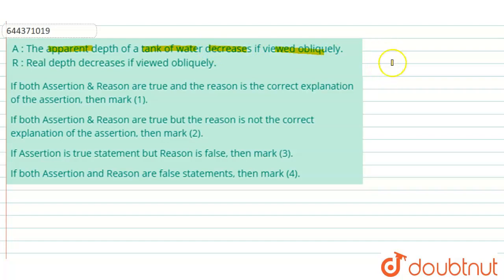If there is a tank of water and we view it obliquely from air, what appears is that the height up to which the water is filled appears to be less. This is what the assertion is saying — that the apparent depth decreases. The reason states that the real depth decreases if viewed obliquely.